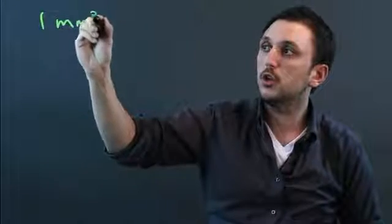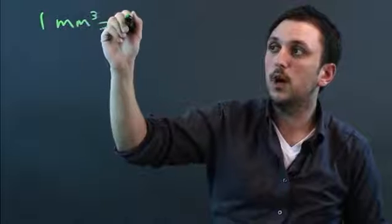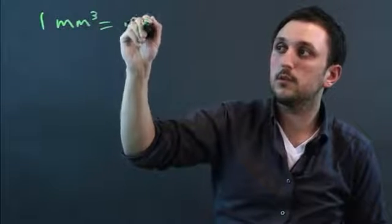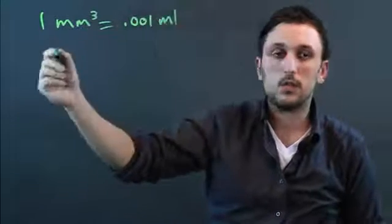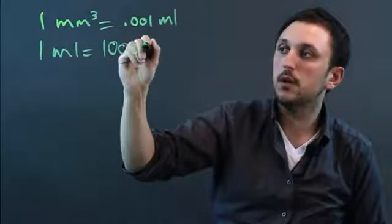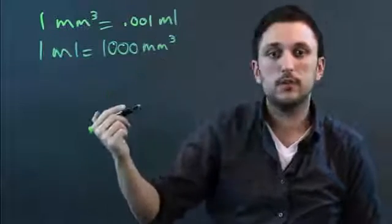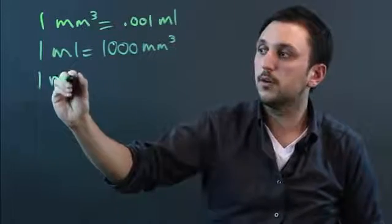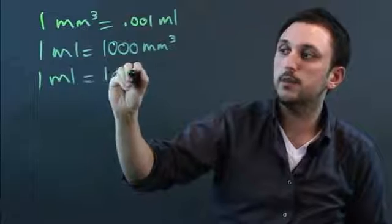So, one millimeter cubed is equal to .001 milliliters, and one milliliter equals 1,000 millimeters cubed, because one milliliter is also equal to one centimeter cubed.